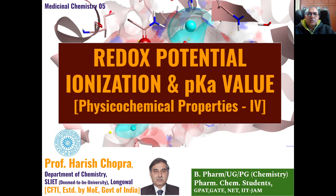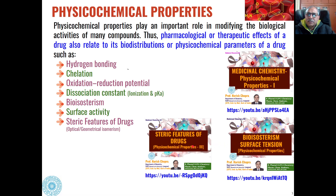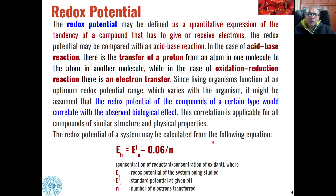Dear students, this is our fifth lecture on medicinal chemistry. In the previous lectures we studied physicochemical properties including the basic concepts of medicinal chemistry, hydrogen bonding, bioisosterism, surface activity, and steric features of drugs. In the present lecture we will discuss redox potential and ionization.